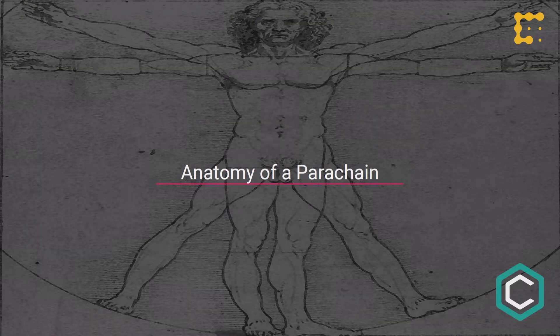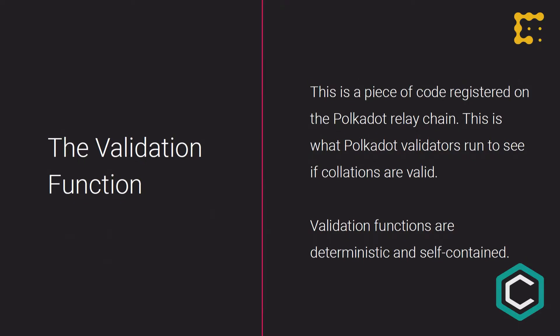Regarding the anatomy of a parachain: we have a conceptual split between the authoring of blocks and the signing off on blocks. Traditionally, the same people responsible for creating blocks are also responsible for their absolute security — in proof of stake, you author a block, and if it's bad, you get slashed. In Polkadot, because we're distributing security over many chains — akin to sharding — the key difference is that the chains are heterogeneous as opposed to homogeneous.